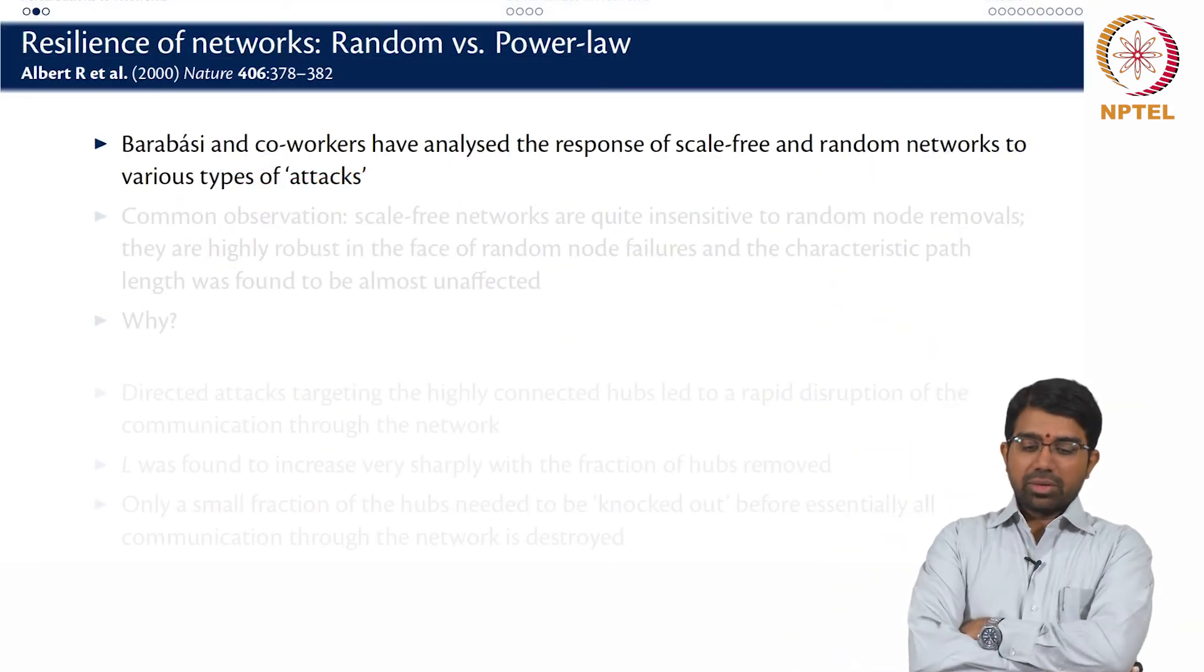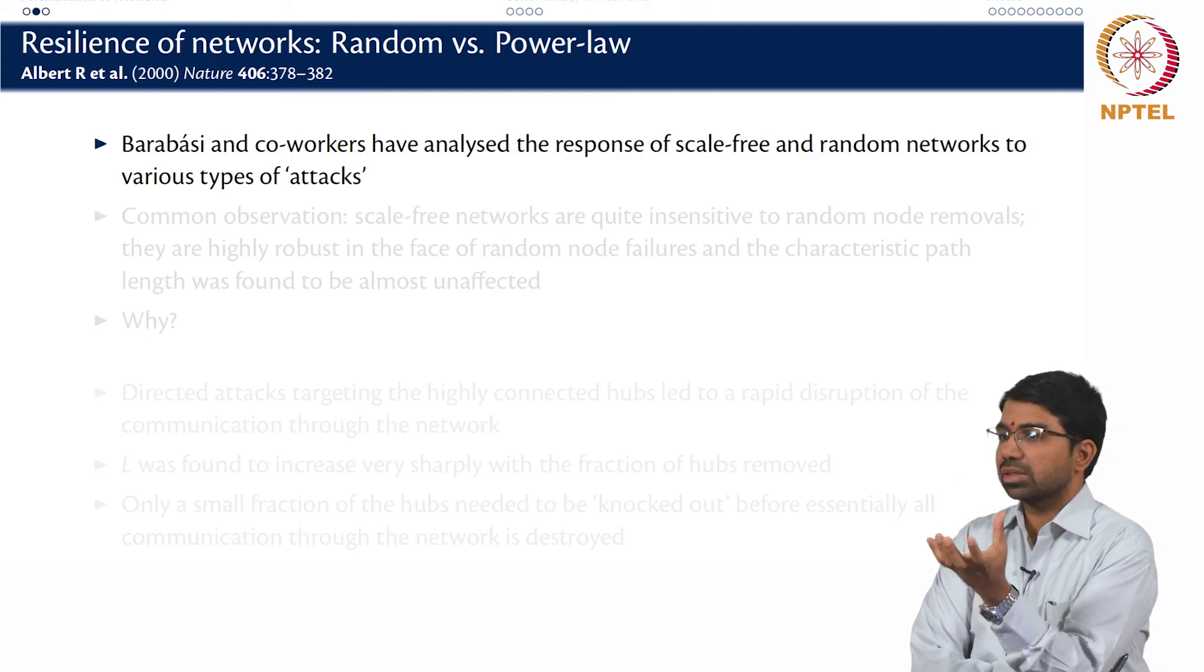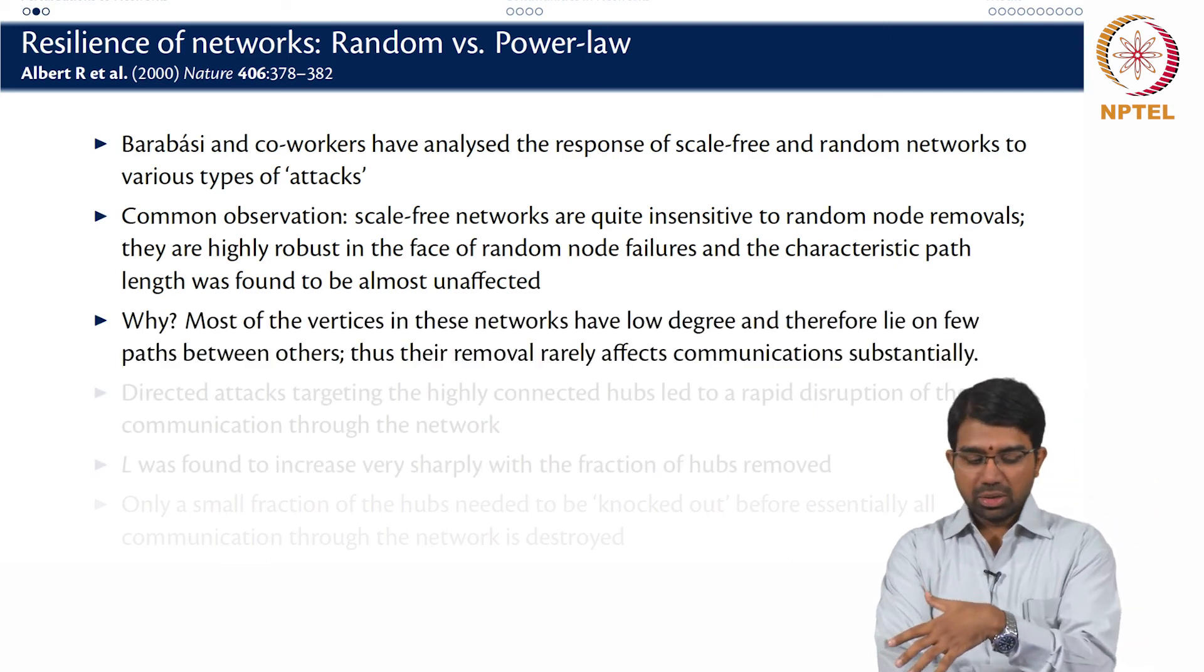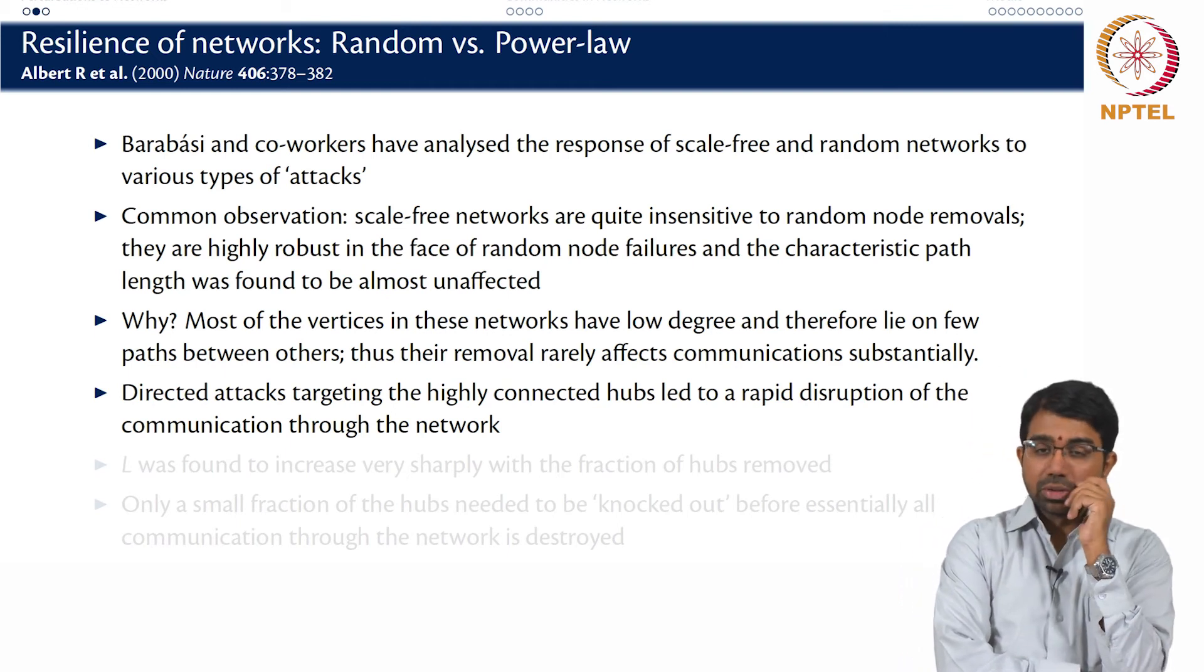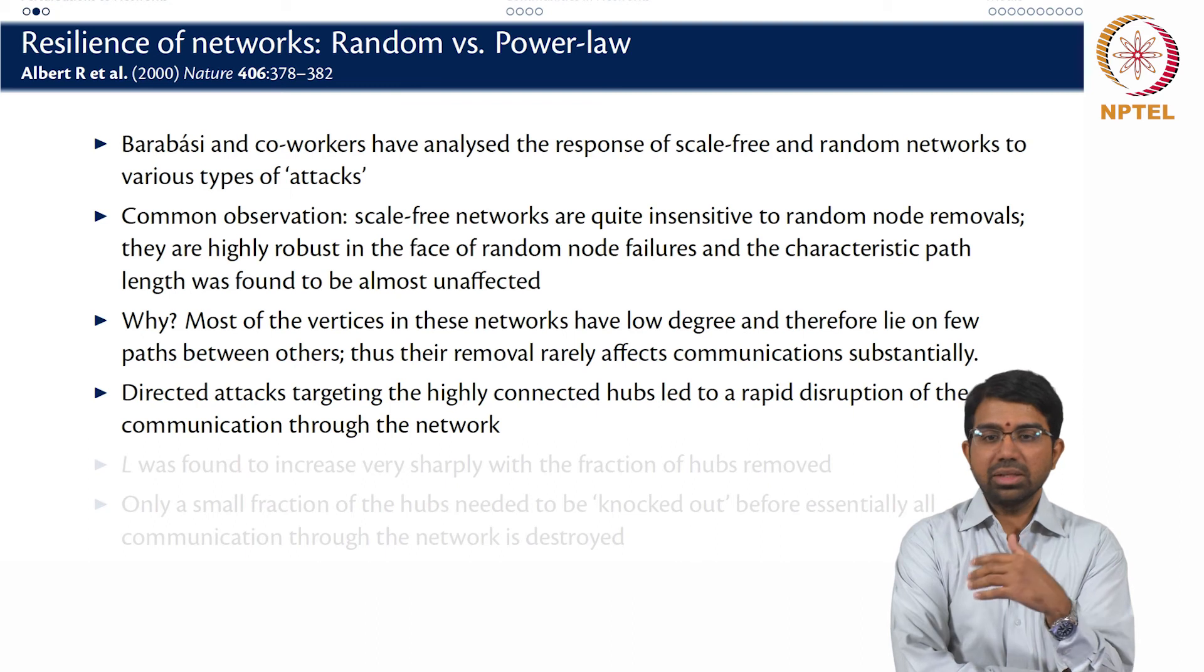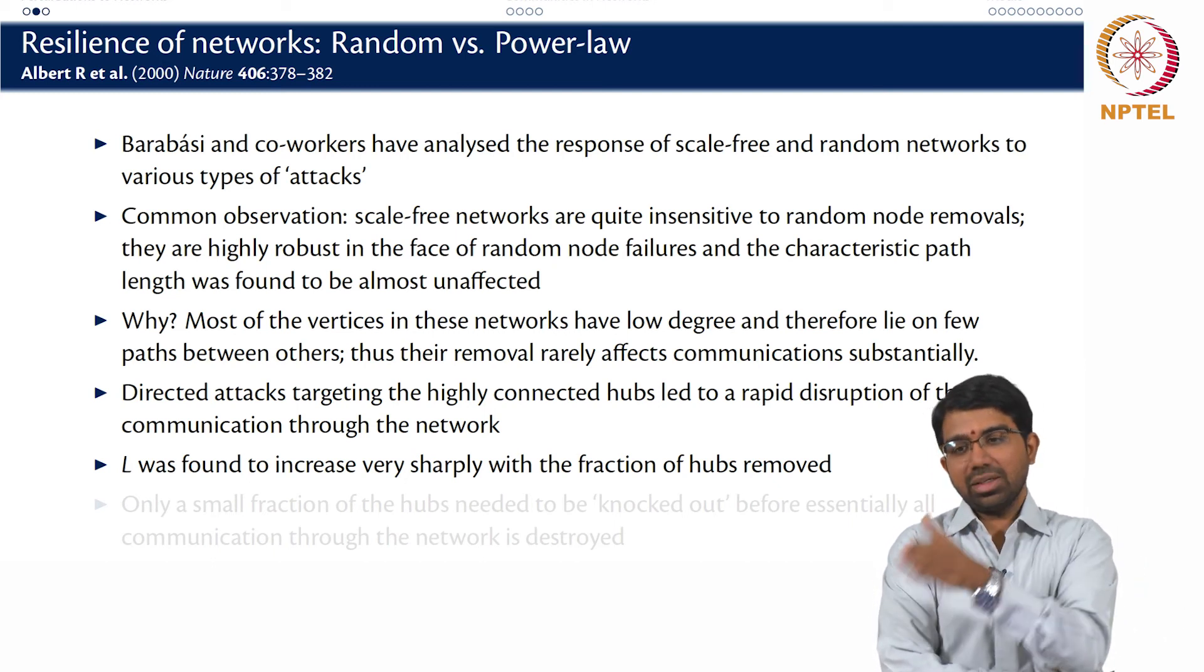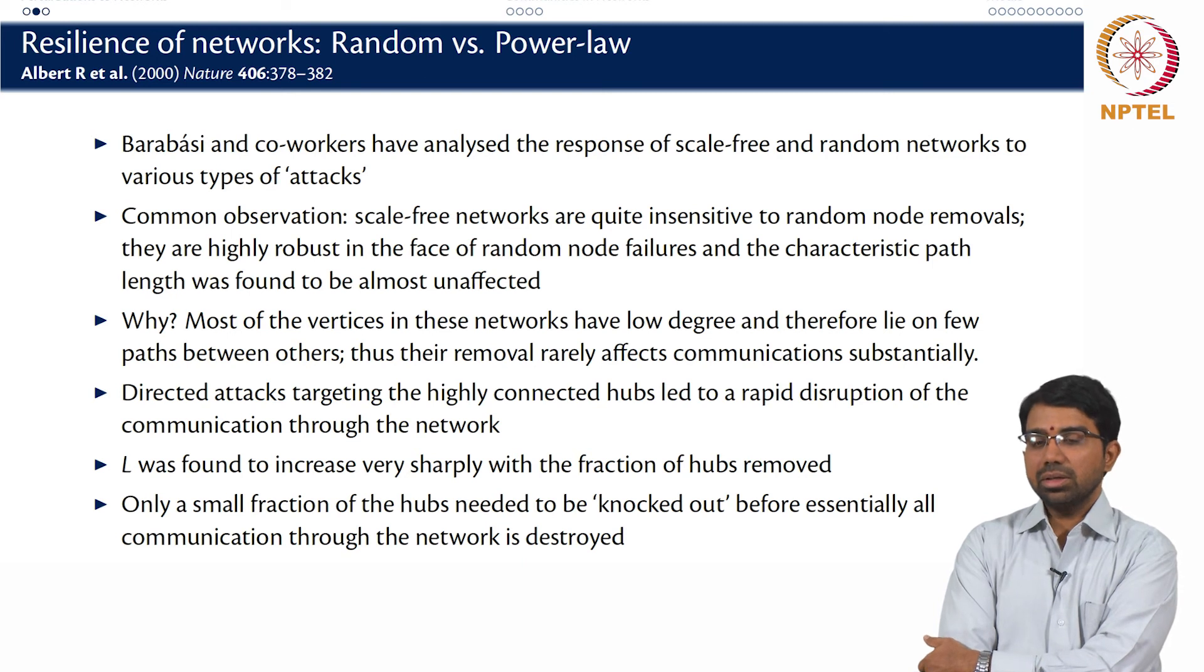So Barabasi and co-workers studied scale free networks and random networks in terms of how do they respond to attacks, various types of attacks. You could have a targeted attack as we discussed or you can have a random attack. Common observation: scale free networks are insensitive to random attacks, it's not surprising, because most vertices in these networks have low degree, whereas directed attacks targeting the highly connected hubs will rapidly disintegrate the network. So these are experiments you can try. You can run a simulation, create a scale free network, start knocking out nodes at random and then plot characteristic path length. So L was found to increase very sharply with the fraction of hubs removed. As you remove the hubs, it increases very fast and then you will have a drop when the whole network gets fragmented, and you needed only to knock out a small fraction of the hubs before literally killing the entire network.